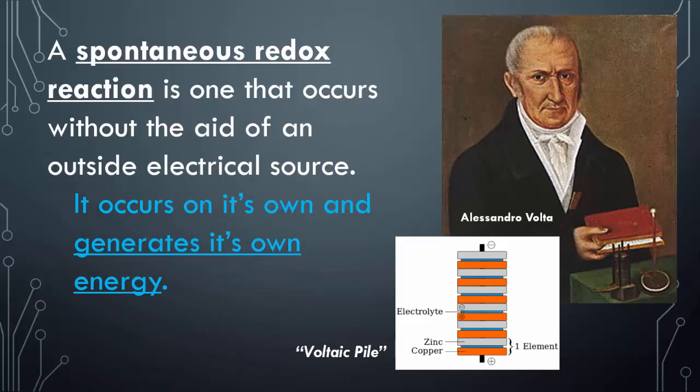This is Alessandro Volta, who came up with the voltaic pile — and volts came from him as well. If you notice, he puts together copper and zinc in this pile. The elements, because copper and zinc, depending on their activity from table J, are going to cause the electrons to flow from one of those elements to another element.